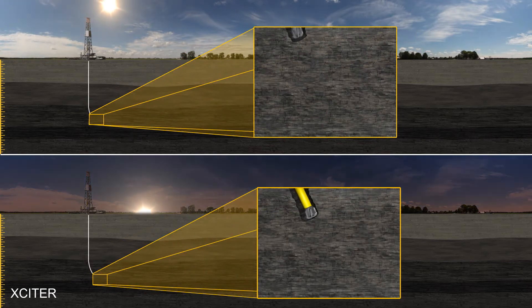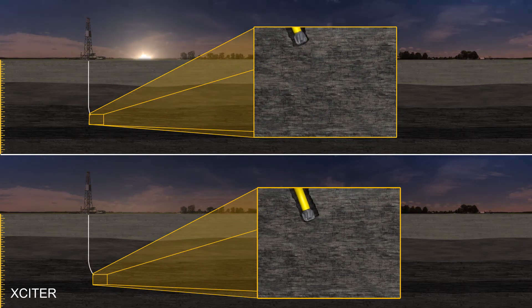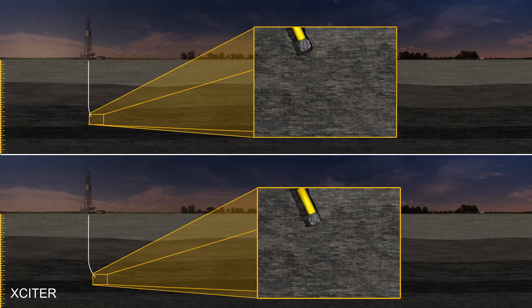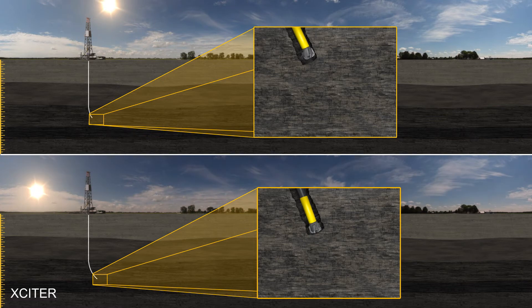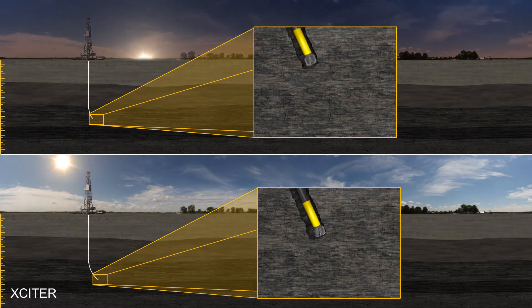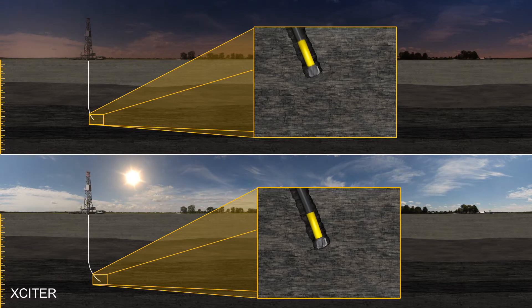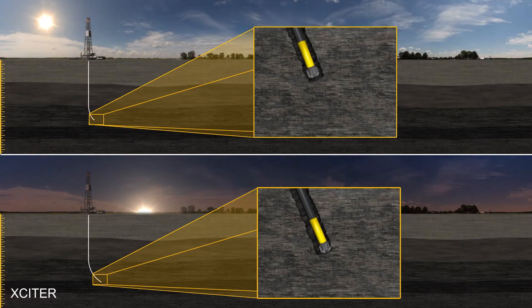The Exciter produces high-frequency radial or XY-axis vibration only. As such, the Exciter can be placed in close proximity to the directional assembly without the risk of damaging MWD tools or interference with MWD signals. Standard Exciter placement is 10 to 30 meters above the top non-magnetic drill collar.